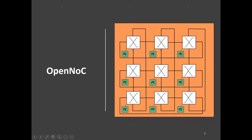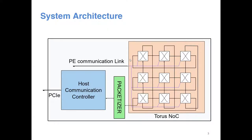These are the switches and these are the PEs. The processing elements depend upon the particular application we are aiming for, while the routing infrastructure remains the same throughout. Here you can see all the PE interfaces — I have combined them and they come out as a single flattened interface.